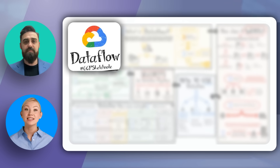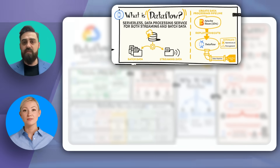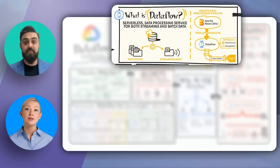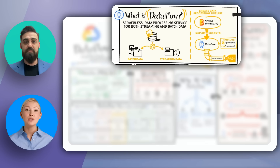That's where Google Cloud Dataflow comes in. It provides a unified programming model and an auto-scaling data processing service for both batch and stream processing. Google Cloud Dataflow is a serverless data processing service that handles both streaming and batch data. It uses the Apache Beam SDK to create data processing pipelines that can be deployed and executed seamlessly on the cloud.